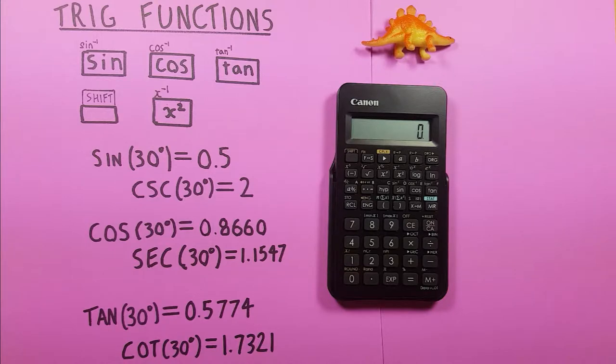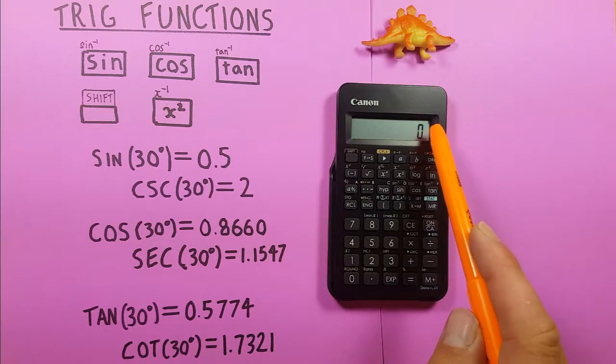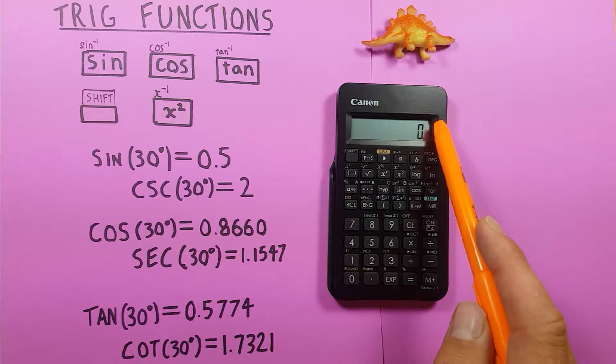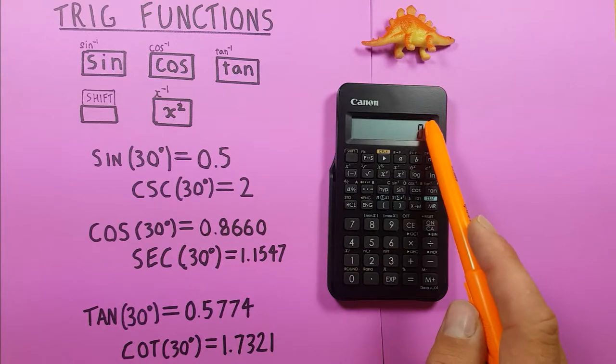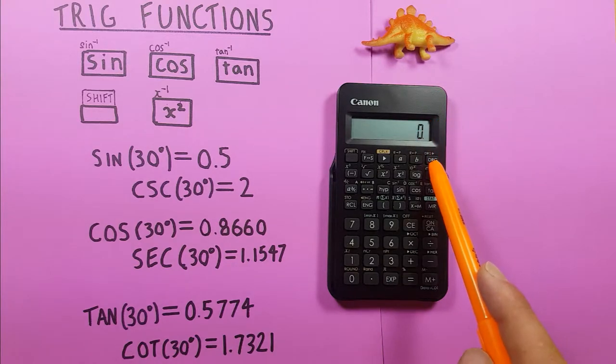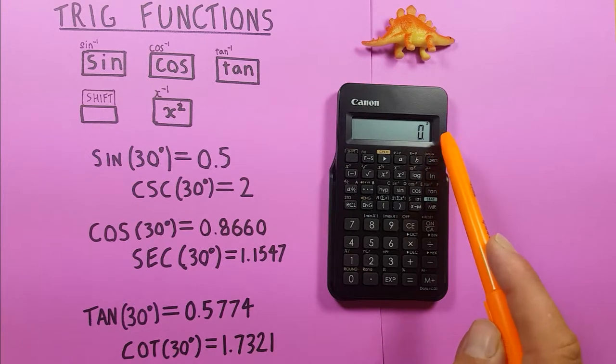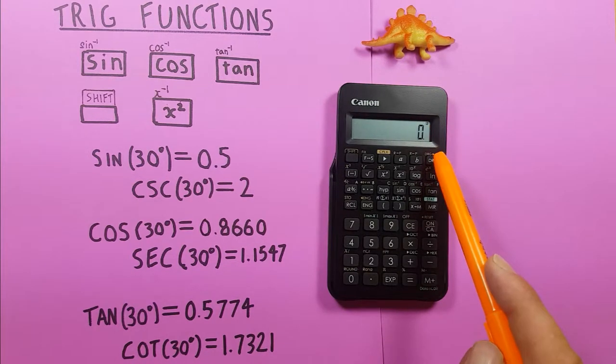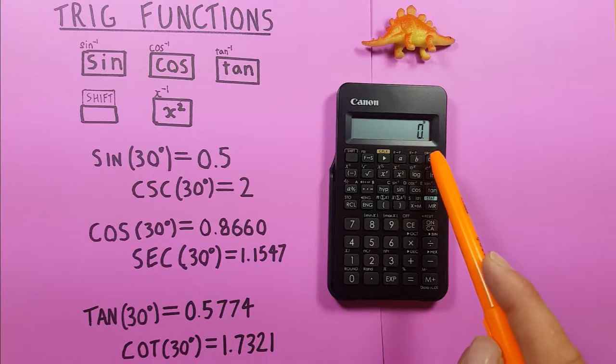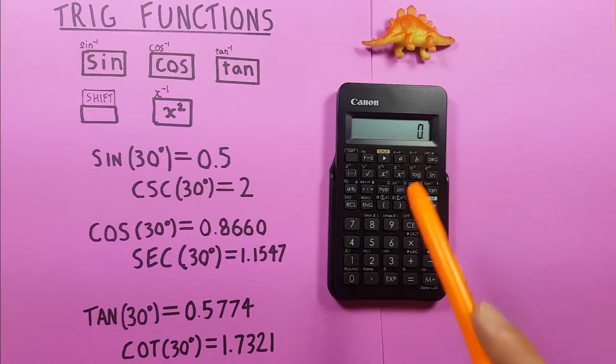Now all these examples will be using degrees so the first thing we want to do is make sure our calculator is in degrees mode. You can see that it is if there's a D in the top right corner here. If there's an R or a G you can change that by pressing this DRG key. Every time you press it the letter will change so it goes R to G and then to D. So make sure you have that D up there.